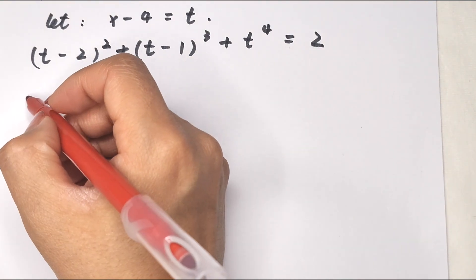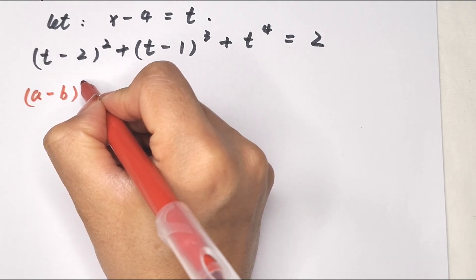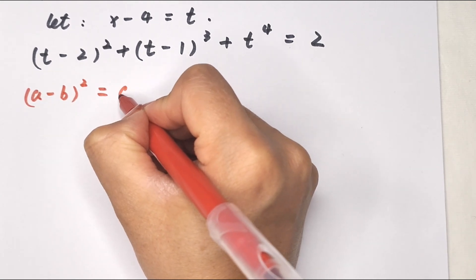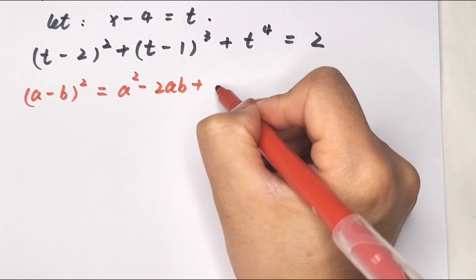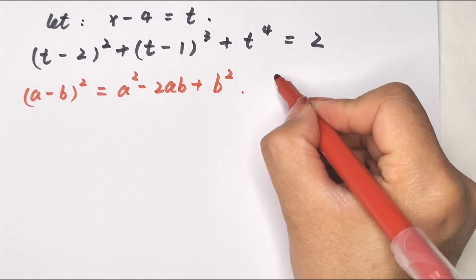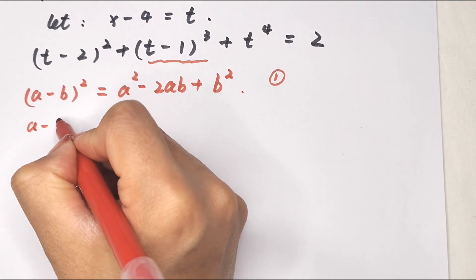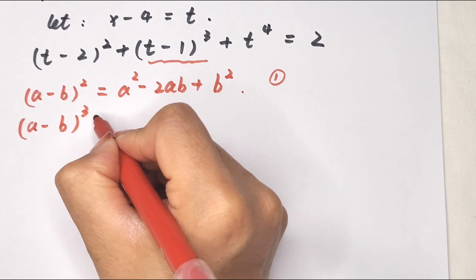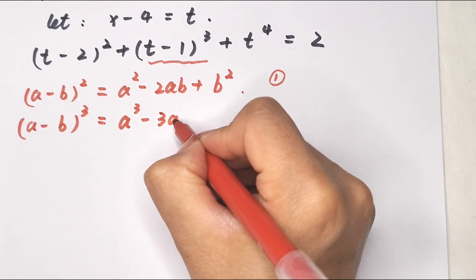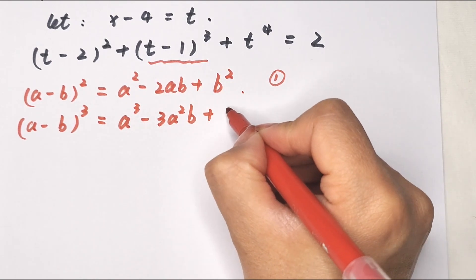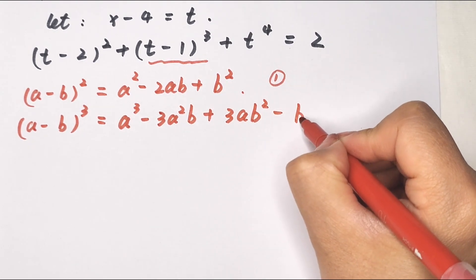Now we apply the formula: (a minus b) squared equals a squared minus 2ab plus b squared. And (a minus b) cubed equals a cubed minus 3a squared b plus 3ab squared minus b cubed.